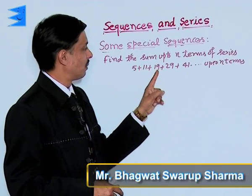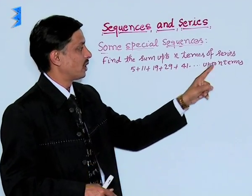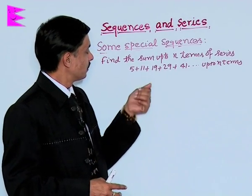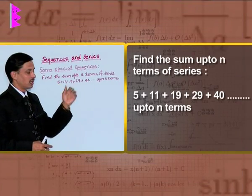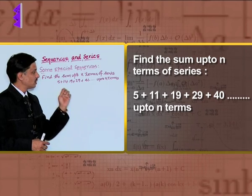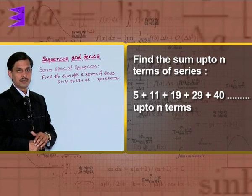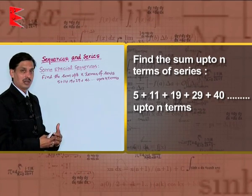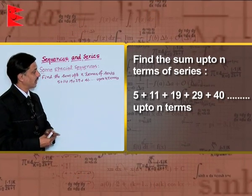The series is 5 plus 11 plus 19 plus 29 plus 41 plus dot dot dot up to n terms. We are observing this progression, this series is neither AP nor GP and there is no pattern observable to find its nth term.